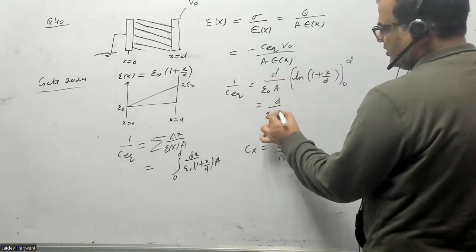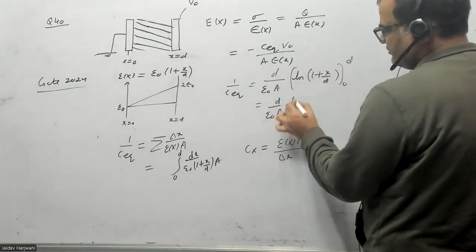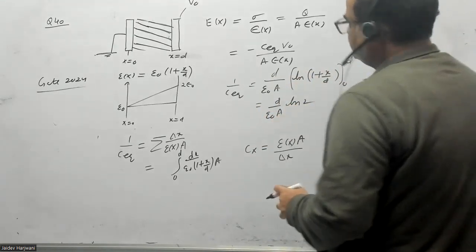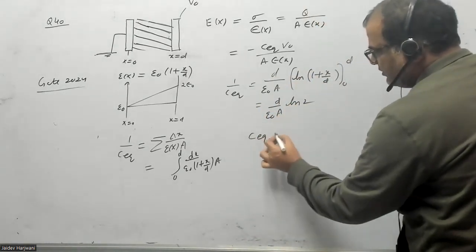This gives me ε naught A over D ln 2 (and 0 gives ln 1 which is 0), so this gives me ln 2. Now I have the value of C equivalent. So C equivalent of this capacitor is given as ε naught A over D ln 2.